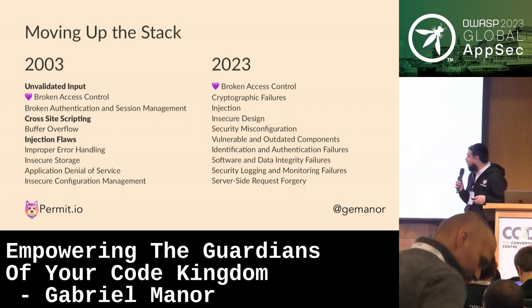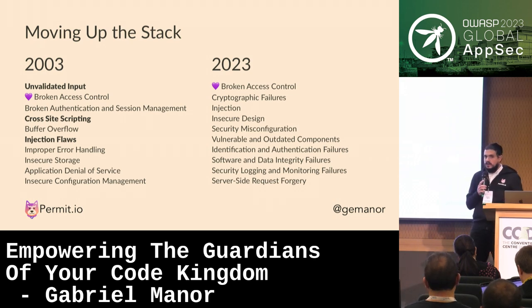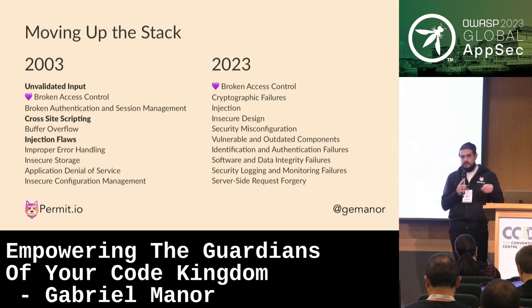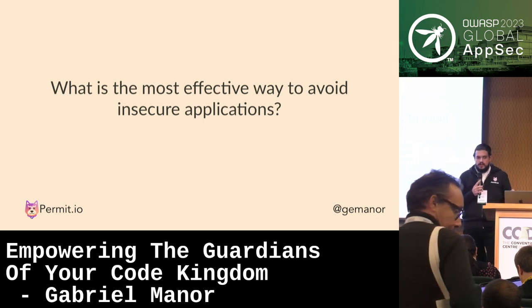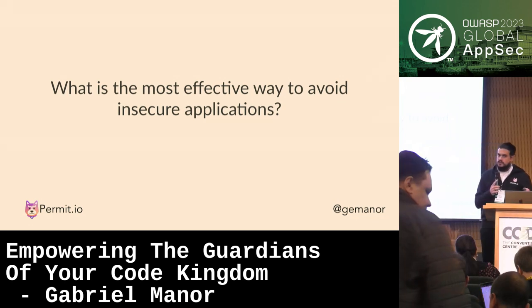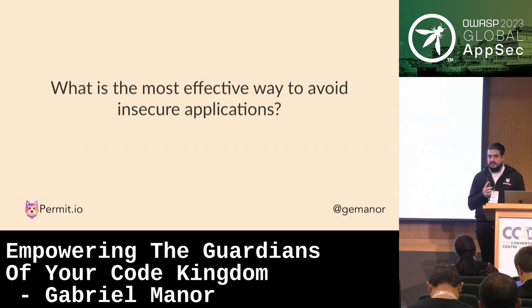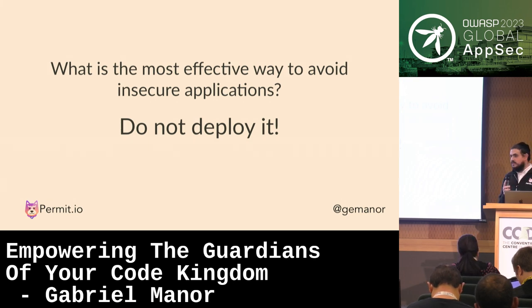Today we have injection as one item, but back then we had three items on the list for injection. And if we look at 2023, new items came in — insecure design and security misconfiguration. But one thing never changed: the most effective way to avoid insecure applications is to not deploy them. If we don't deploy insecure applications, our applications will always be secure.